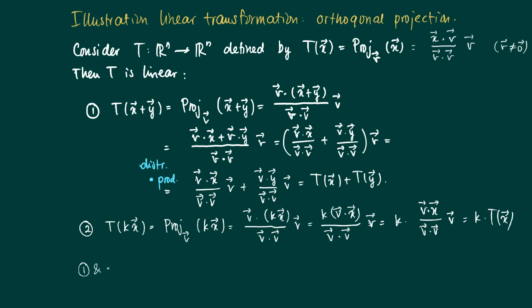Since we have now proved property 1 and 2, we know that the orthogonal projection transformation is actually a linear one.